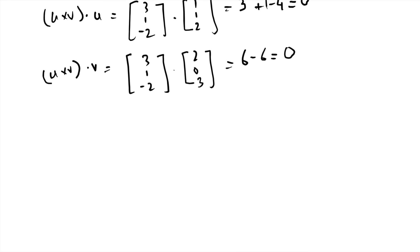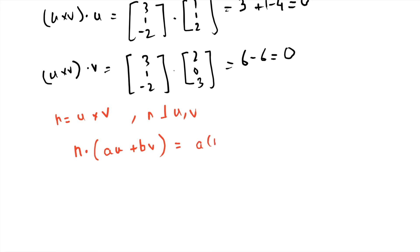If n equals u cross v, then n is normal to both u and v, and n will also be normal to any linear combination of u and v. For any vector a·u + b·v, the dot product n · (a·u + b·v) expands to a(n·u) + b(n·v) = 0. So if u and v are not multiples of each other, their span forms an entire plane, and u cross v is normal to that plane.